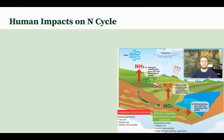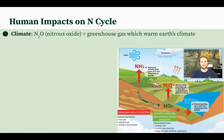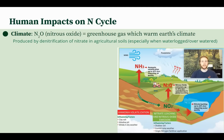Now we'll wrap up by talking about some human impacts on the nitrogen cycle. Humans impact the climate through the nitrogen cycle by the release of nitrous oxide, which is a greenhouse gas that traps heat in Earth's atmosphere and warms it up. It is produced by agricultural soils — when humans clear land and till the soil to plant crops, the bacteria in the soil through denitrification turn the nitrates in the soil into nitrous oxide. This is especially prevalent when the soil is waterlogged or over-irrigated, meaning food production contributes to greenhouse gases, particularly nitrous oxide.